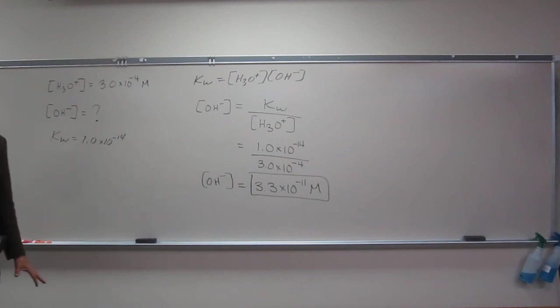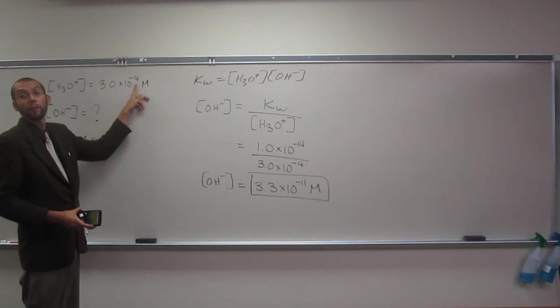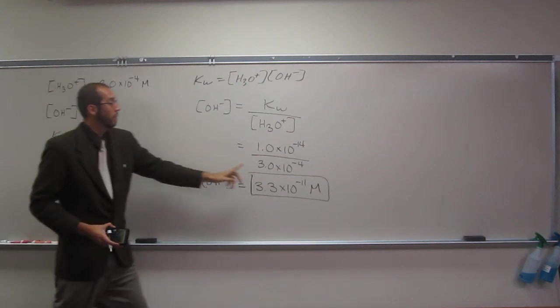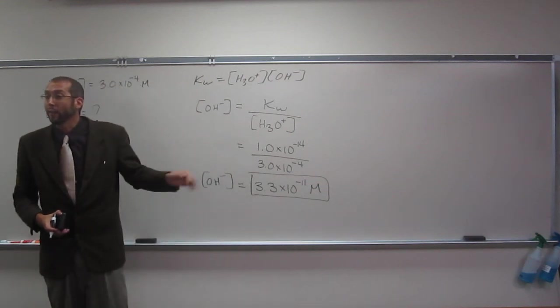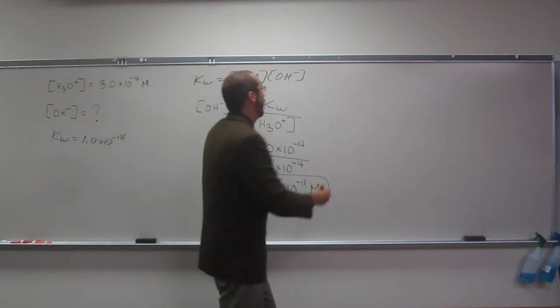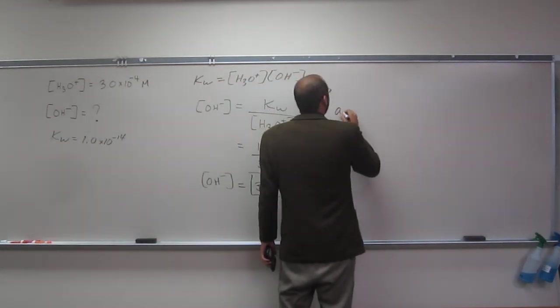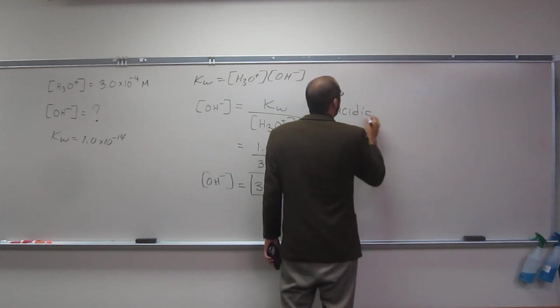So if you want to now really compare the hydroxide to the hydronium, hopefully you can see here that negative 4 as a superscript is much bigger than negative 11. And then from that analysis, you can definitely say now we are an acidic solution.